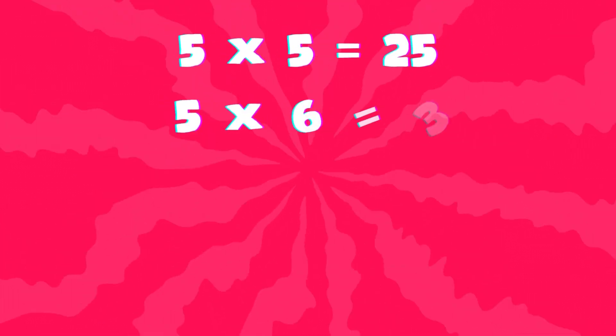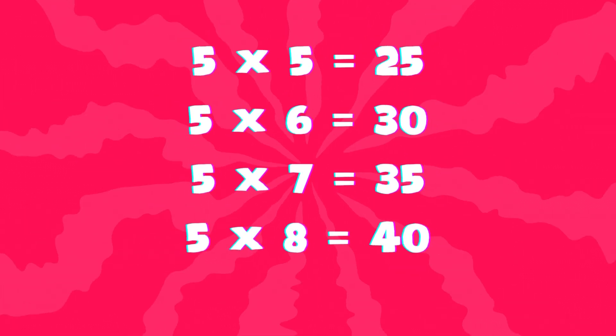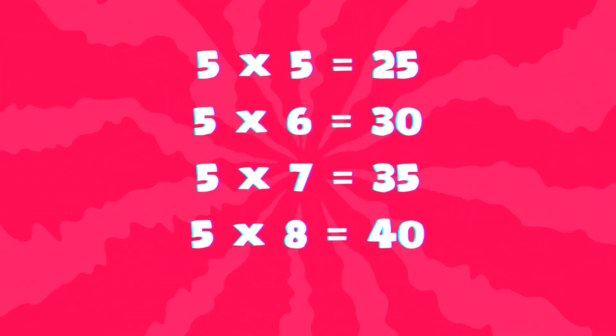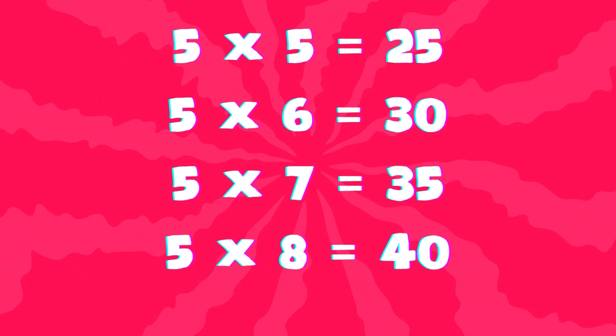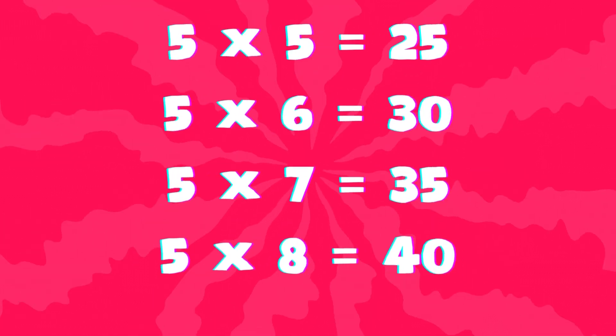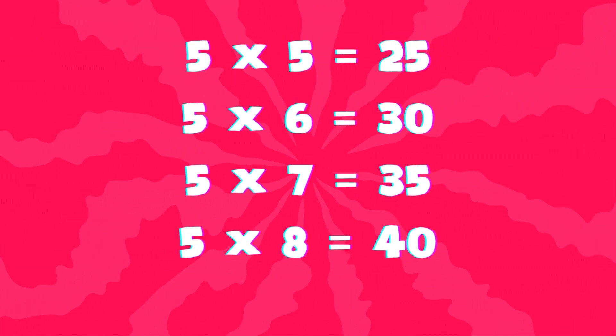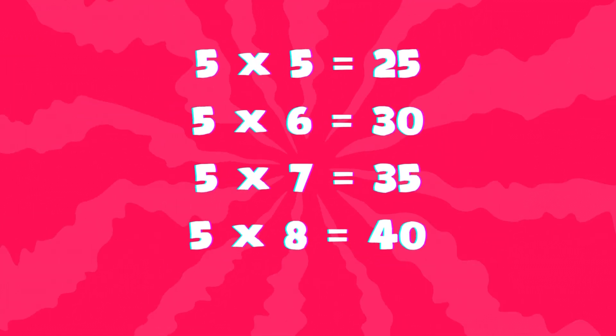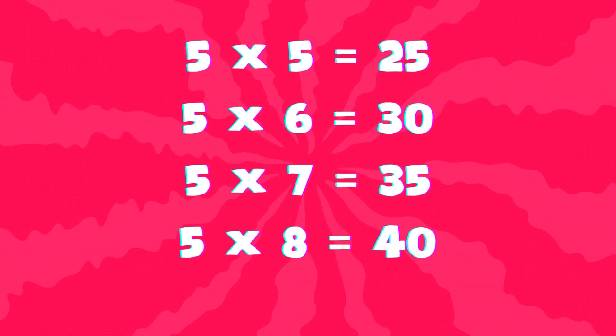5 times 5 is 25, keep it in your mind. 5 times 6 is 30, it's the rhythm you will find. 5 times 7 is 35, groove it with a cheer. 5 times 8 is 40,